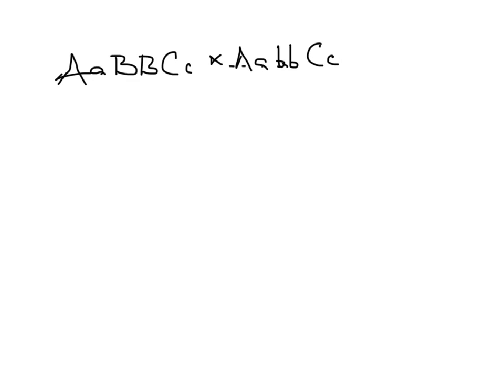Let's think about the genotypic ratio first. Starting with A — it doesn't matter which gene we start with since they're independent. Big A little a crossed to big A little a is a heterozygous cross. Review basic Mendelian monohybrid crosses and you'll remember that's a 1 to 2 to 1 ratio among the progeny. So among the progeny I've got big A big A, big A little a, and little a little a — one of these, two of these, and one of these.